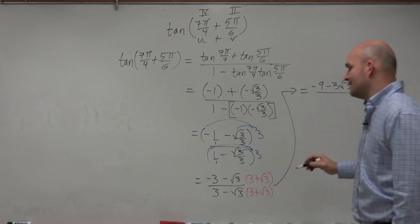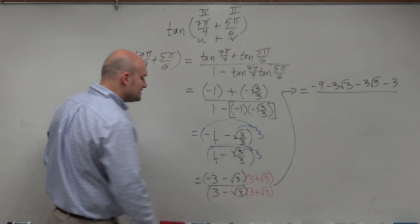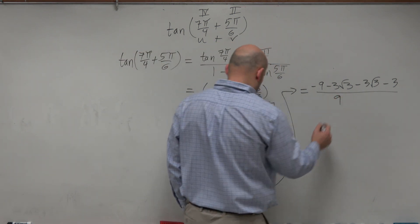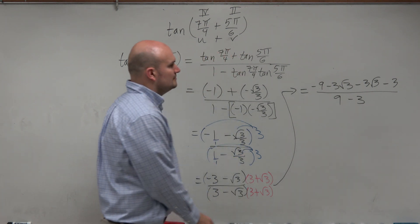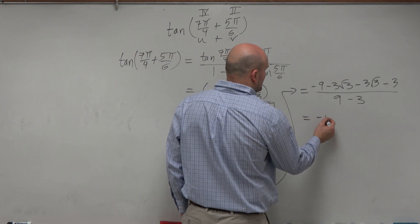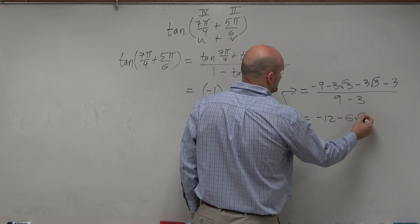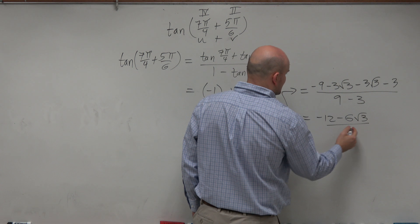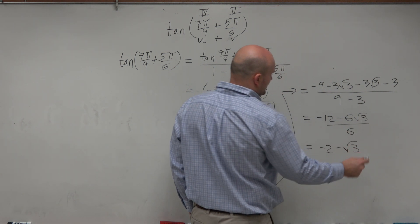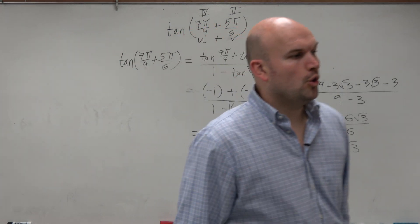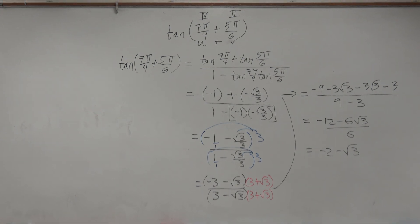Now, the denominator shouldn't be that bad because that's just the difference of two squares. When you multiply out the difference of two squares, you square the first two terms, which is 9, and you square the last two terms, which is negative 3. Now we can simplify this a little bit more. Negative 12 minus 6 square root of 3 divided by 6, which equals negative 2 minus the square root of 3. So here's what you guys need to know.